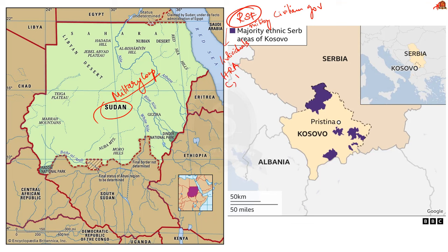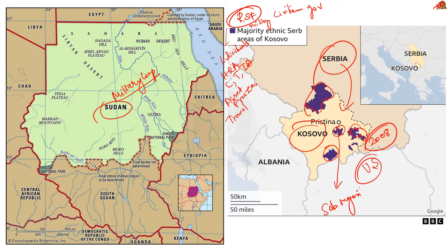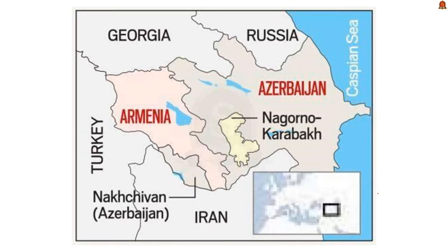The United States can impose sanctions not only on countries but also on individuals involved in human rights abuse, corruption, terrorism, and other illicit activities — these may involve freezing assets, restricting travel, or prohibiting financial transactions. Serbia and Kosovo were in the news for protests by local Serbians in the Kosovo region. The core issue lies in Kosovo's declaration of independence from Serbia in 2008, which Serbia does not recognize. NATO-led peacekeepers were employed to contain the protests.